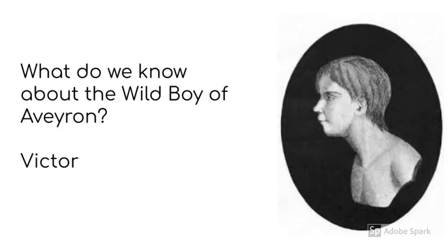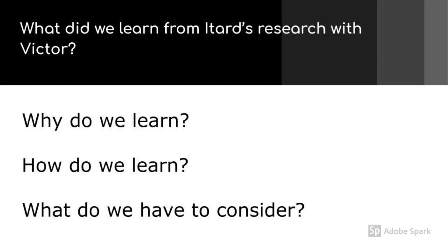The chapter that you read for today begins with the story of the wild boy who was found in the forest as an adolescent boy. The purpose of the story is to explain the importance of various aspects of learning, primarily social interaction. The boy was able to develop some of the knowledge and skills that typically developing young people do. However, the delay in interaction and learning severely inhibited his ability to learn so that he was never able to develop some skills. This early research pointed us towards some big ideas about educating people related to why we learn, how we learn, and some things that we need to consider in the educational process.